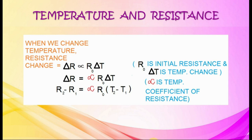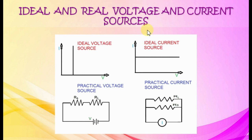Ideal and real voltage and current sources. In an ideal voltage source, voltage is constant. In a practical voltage source, a source resistance is present and connected in series with the source. In an ideal current source, current is constant. In a practical current source, a source resistance is present and connected in parallel with the source.